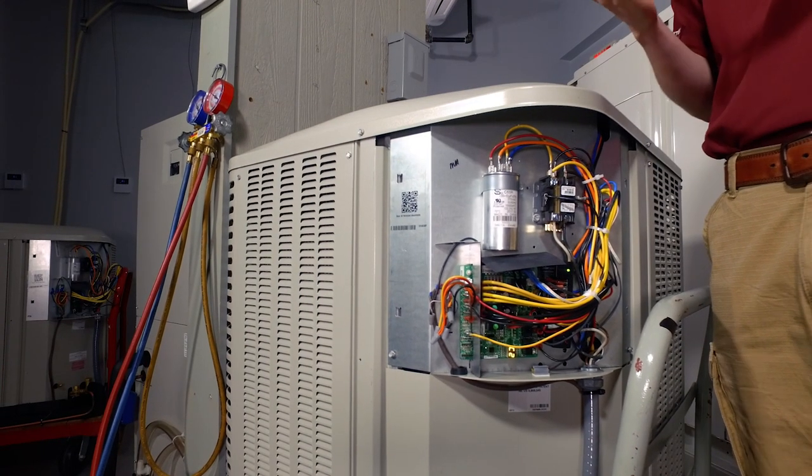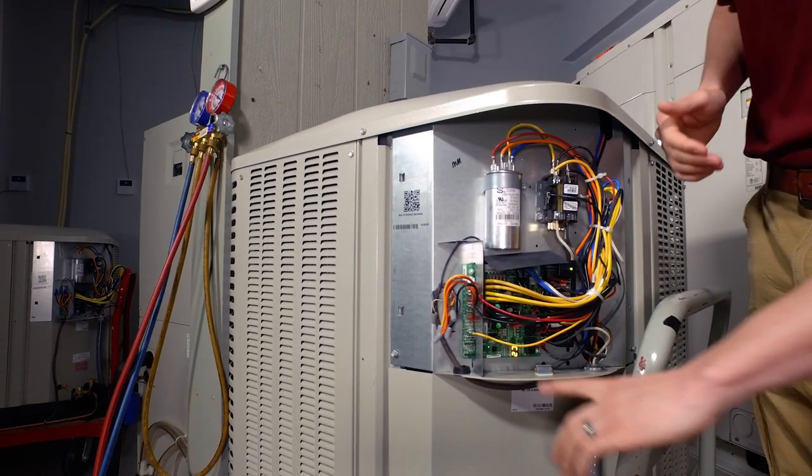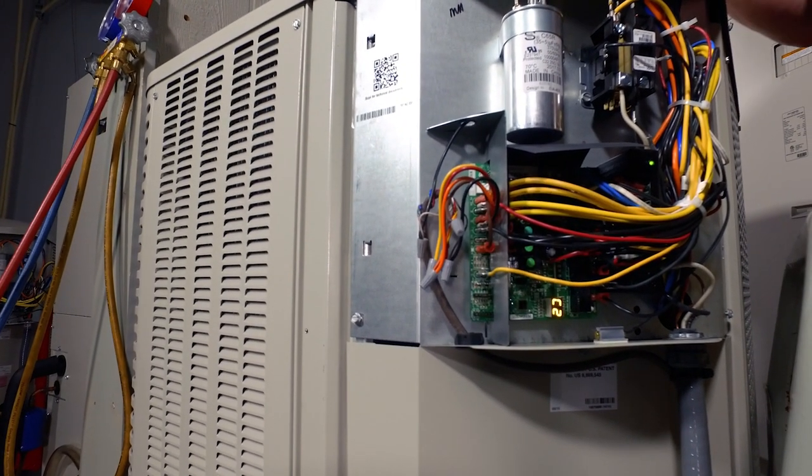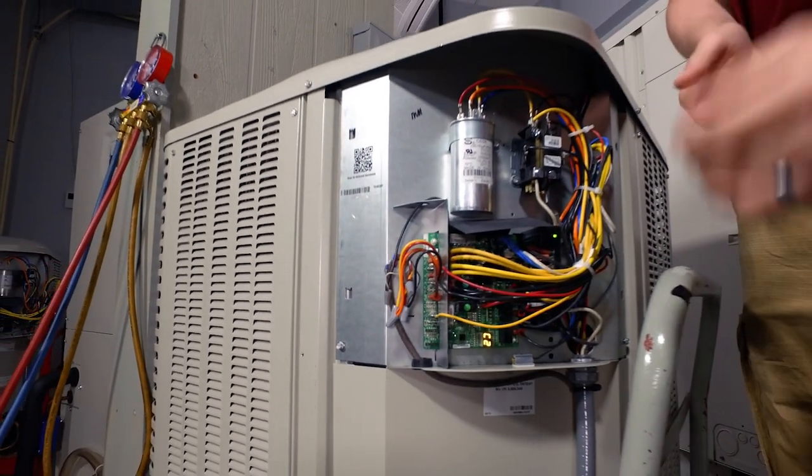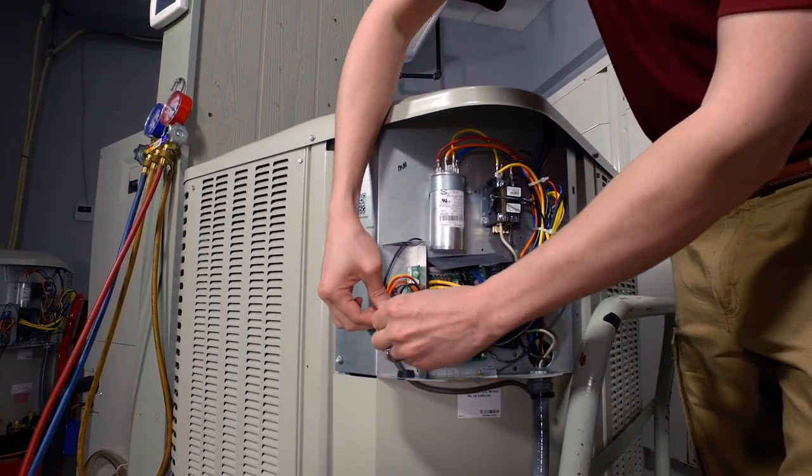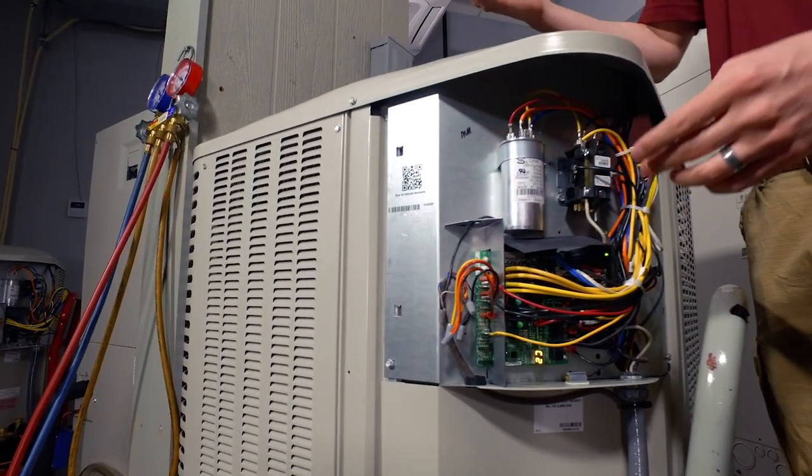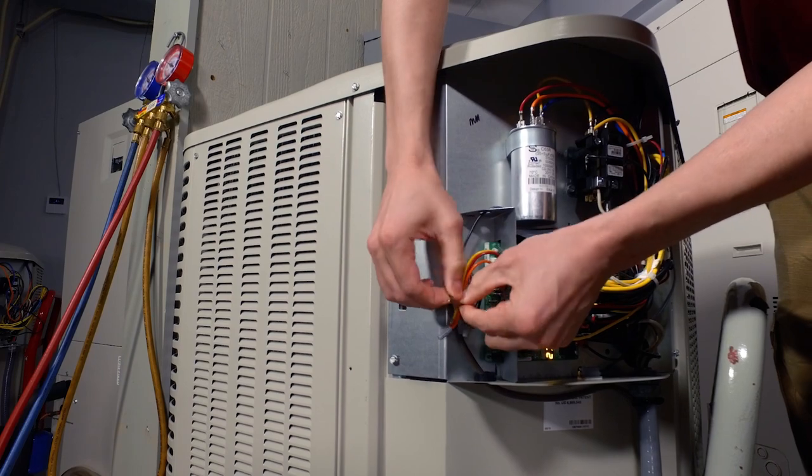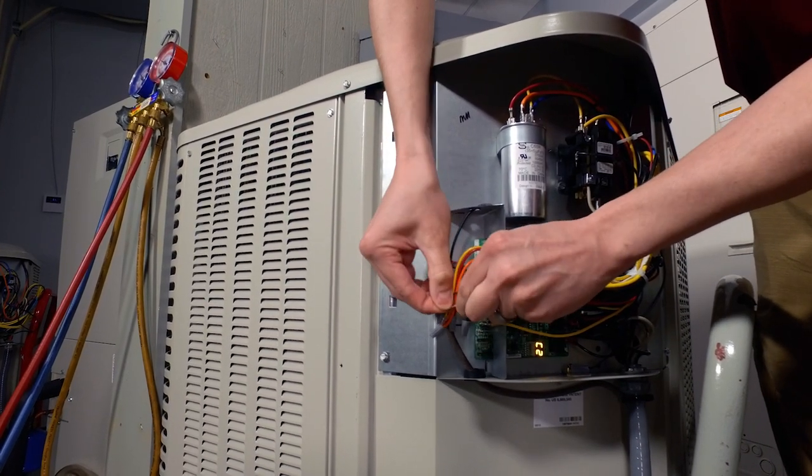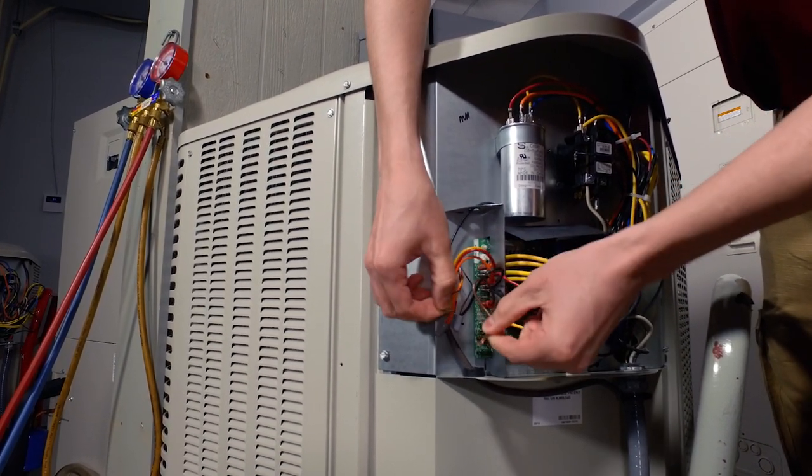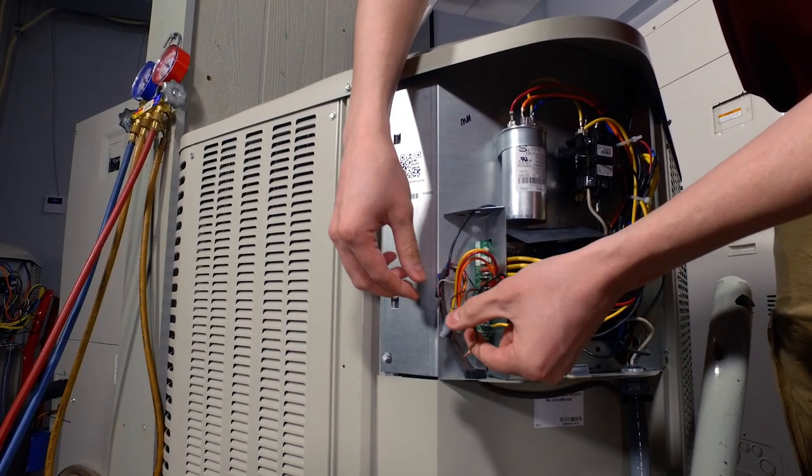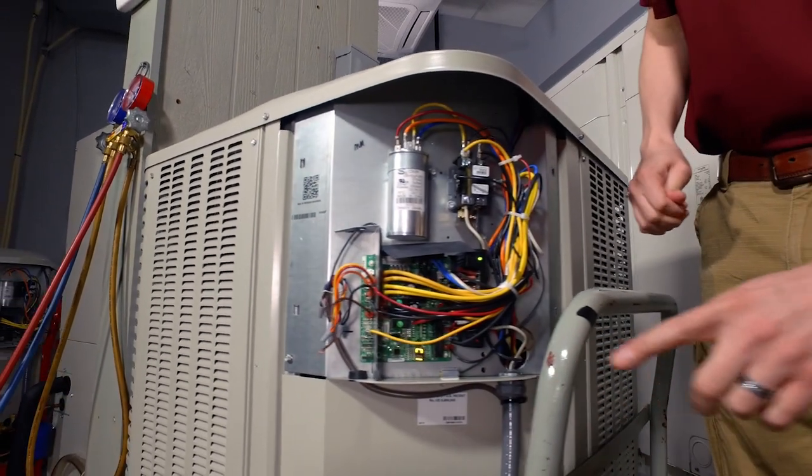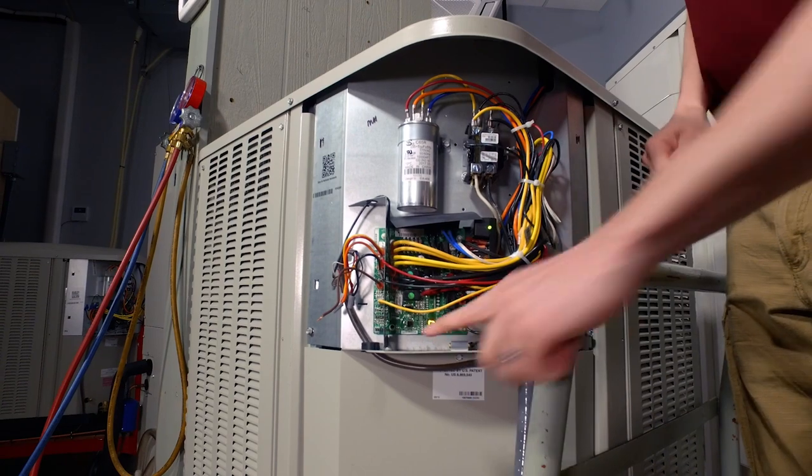One easy way to know whether you're in first or second stage is just by the digital display and seeing what mode you're in. If you have an older piece of equipment that may not have this display, you can take your Y2 wire, and if you think you have the thermostat calling for second stage, you can unwire this and remove it from your Y2 wire. What will happen is we drop down to first stage. So on our board here, we went down to C1.